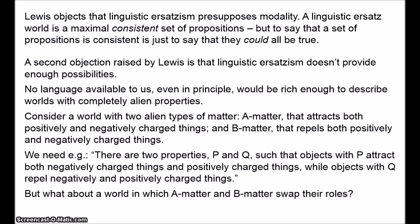So that was pretty brief, but suffice it to say that in Lewis's view, none of the ersatz approaches have the benefits of modal realism. Lewis's argument is that modal realism has all these theoretical benefits. There are other views we might take about possible worlds, but these either fail to have the benefits or they have other serious costs — fictionalism collapses into realism, linguistic ersatzism doesn't provide enough possibilities, and so on. Lewis thinks that when we weigh up all the costs and benefits of the various options, modal realism comes out on top. In the next video we'll look at the objections to modal realism, but that's all for now. Goodbye.